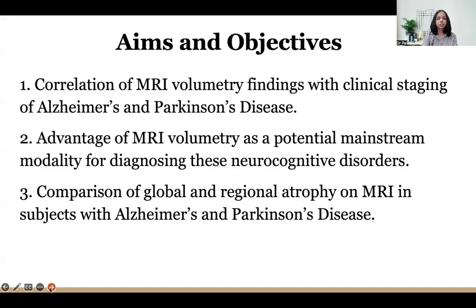Aims and objectives: correlation of MRI volumetric findings for clinical staging of Alzheimer's and Parkinson's disease, advantage of MRI volumetric as a potential mainstream modality for diagnosing these neurocognitive disorders, and comparison of global and regional atrophy on MRI in subjects with Alzheimer's and Parkinson's disease.